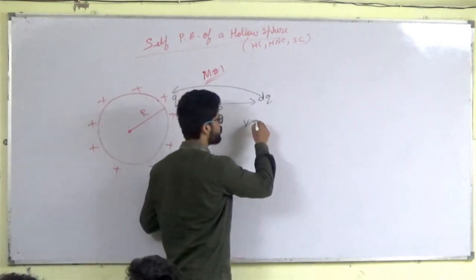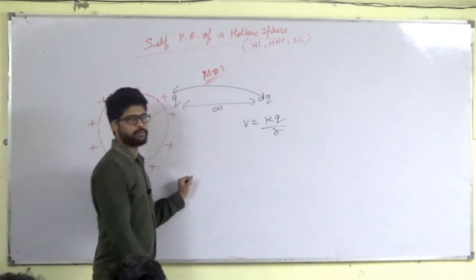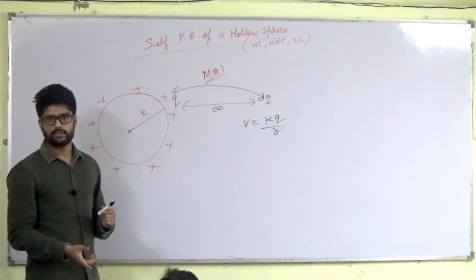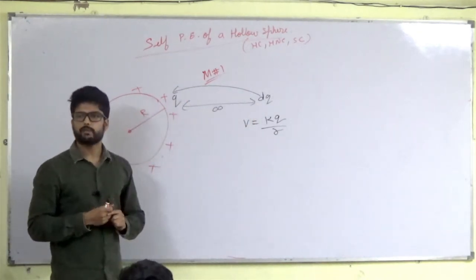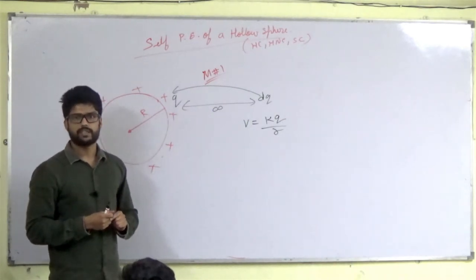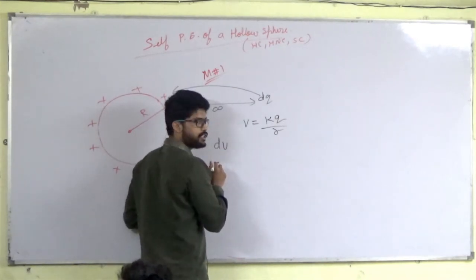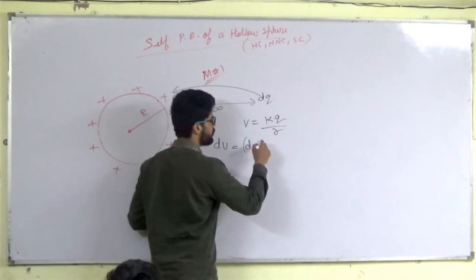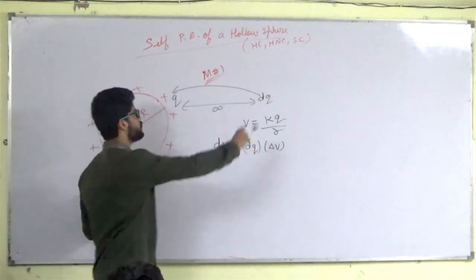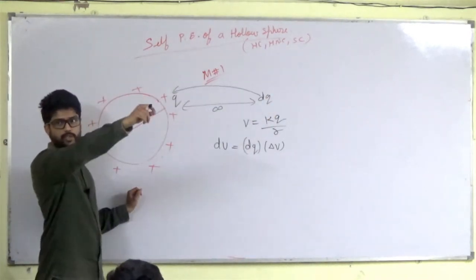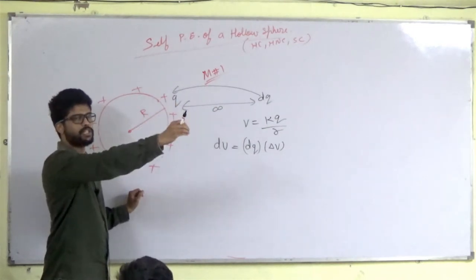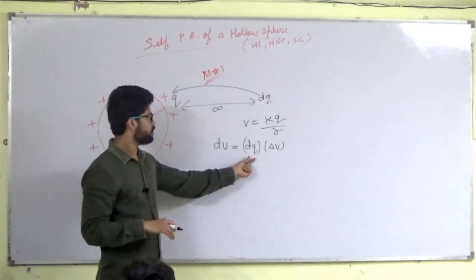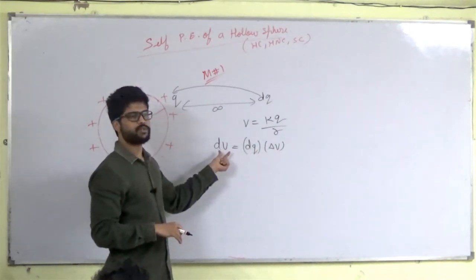When small q charge is already on the sphere, what is the potential? It is kq/R. So when we bring the dq charge from infinity, what is the potential energy change? The change in potential energy du equals charge times change in potential — that is, du equals dq times the potential kq/R. If we multiply the charge by the potential, we get the potential energy increment.